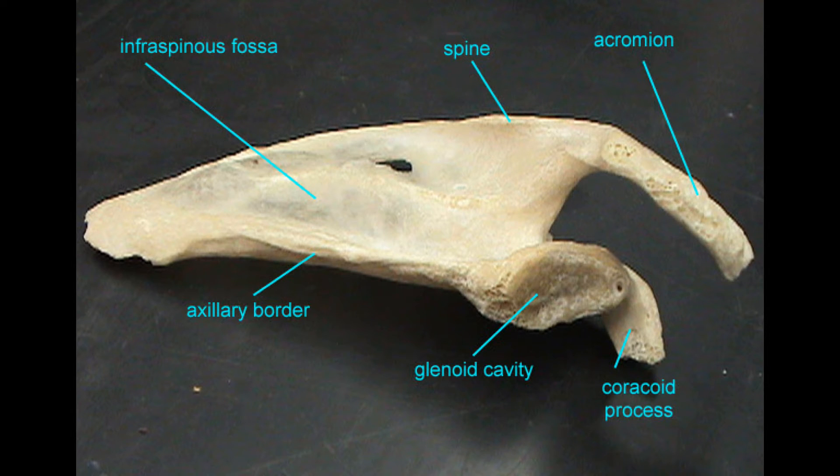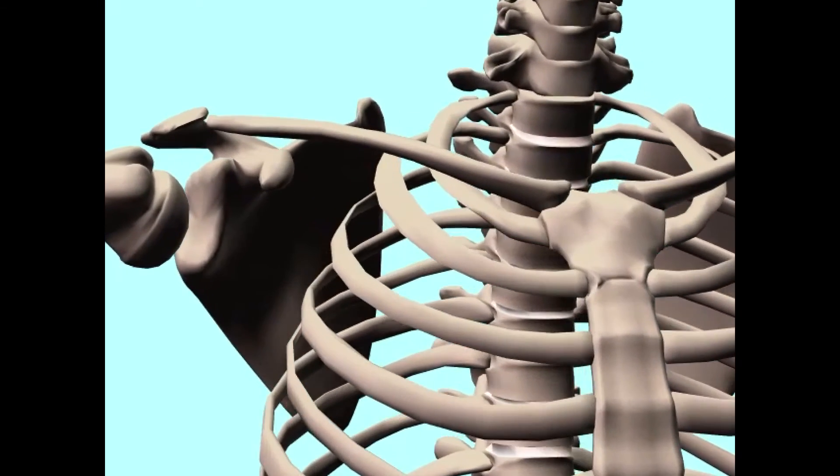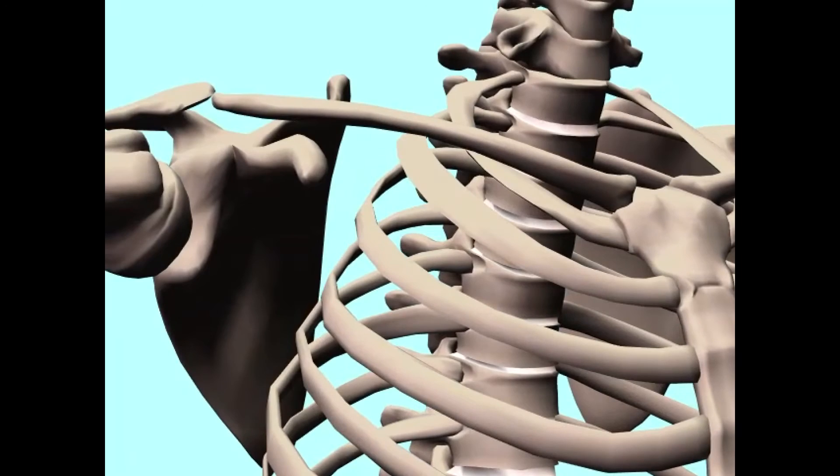There is also a depression on the anterior surface, and since the spine is not located here, there is no word spine in its name. It is the subscapular fossa.